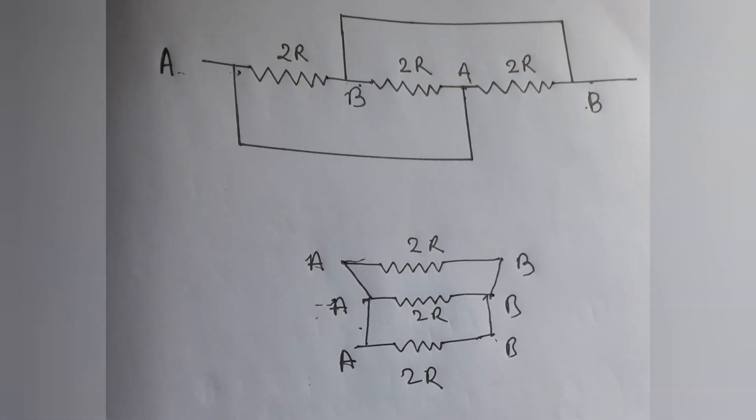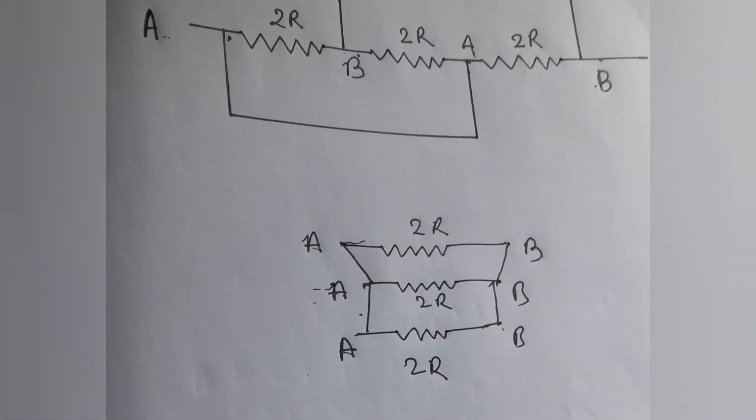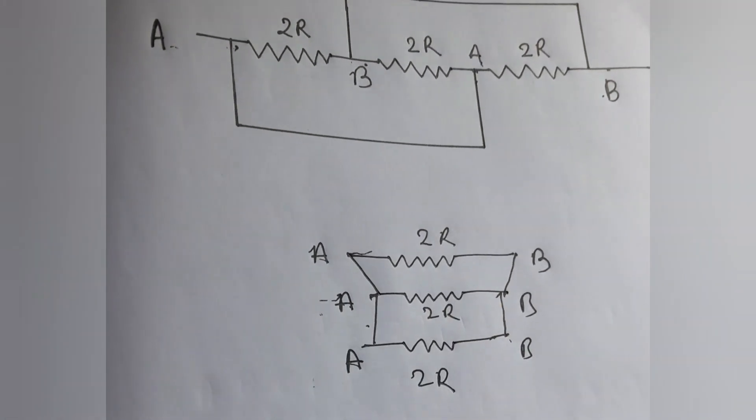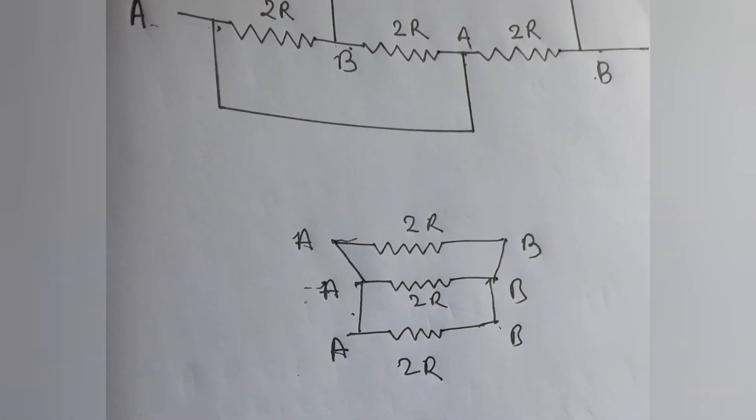Now according to the equivalent resistance of parallel circuit, if R' is the equivalent resistance then 1 by R' equal to 1 by 2R plus 1 by 2R plus 1 by 2R